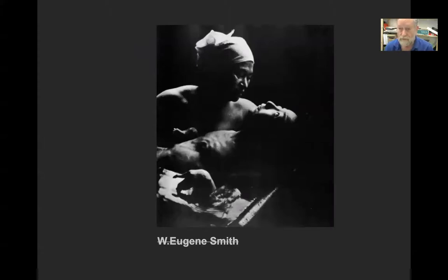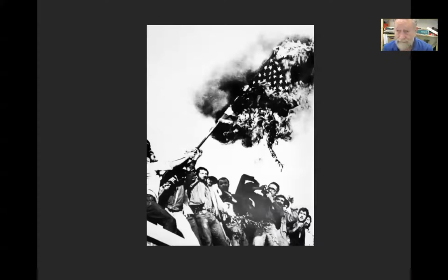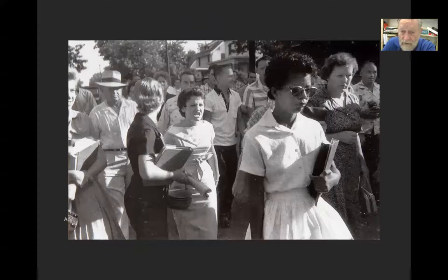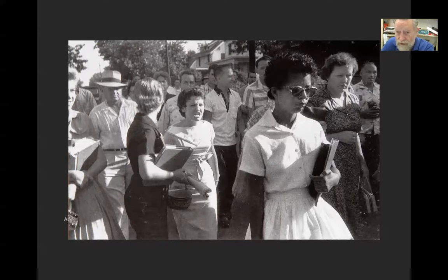W. Eugene Smith was a World War II photographer and later a Life magazine photographer who was sent on assignment to Minamata, Japan, where a factory was dumping mercury waste into the bay. The community fished and ate the fish they caught. This is a woman bathing her 17-year-old daughter who was blind and disabled in multiple ways from mercury poisoning. In 1979 student militants took over the U.S. Embassy in Tehran and burned the American flag day after day. In 1957 segregation ended in Arkansas: the Black girl in the foreground was the first woman of African-American descent to go to this high school, and for a year she had to put up with being taunted. She was incredibly brave.